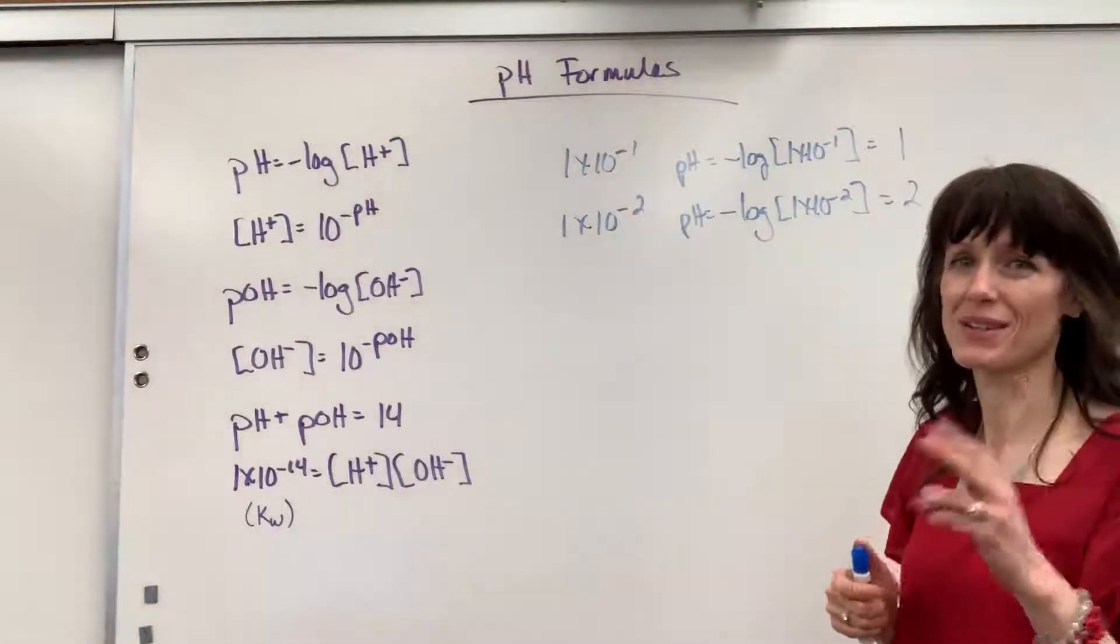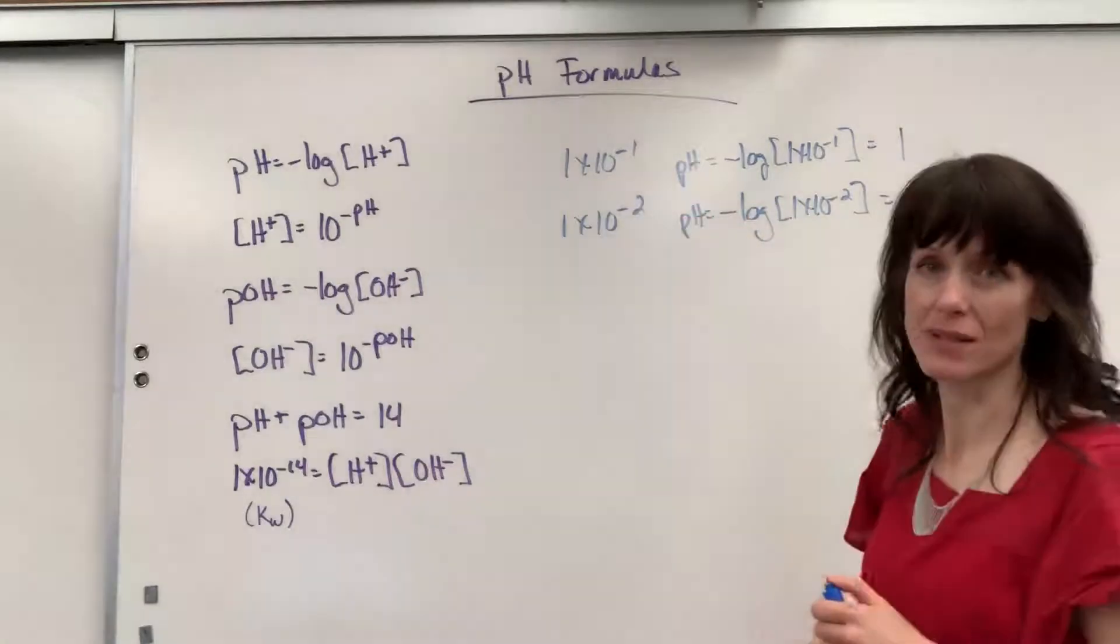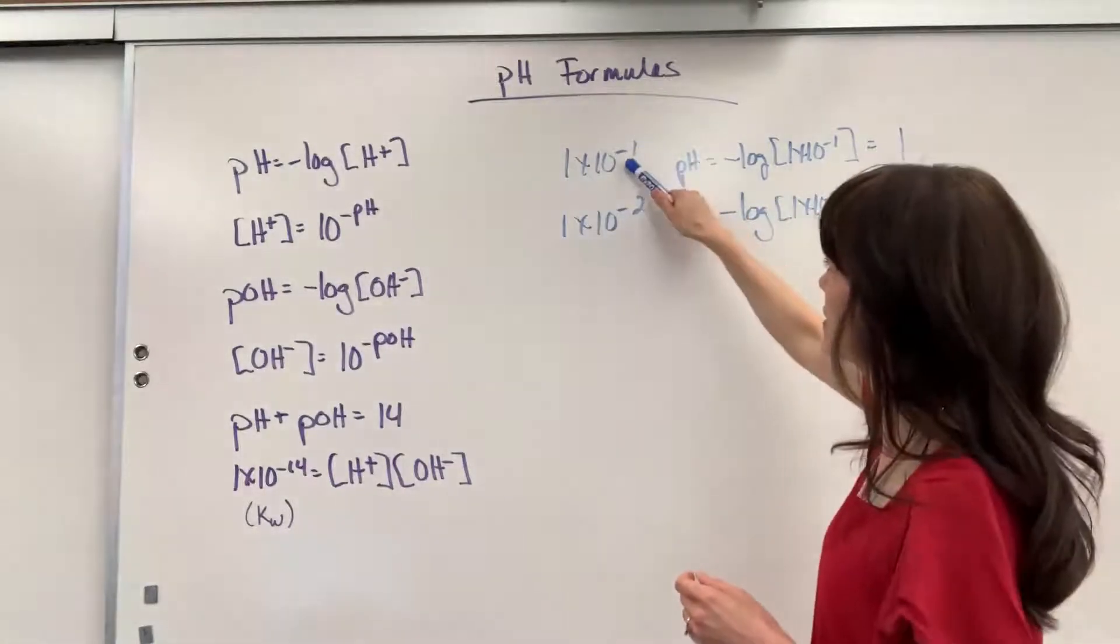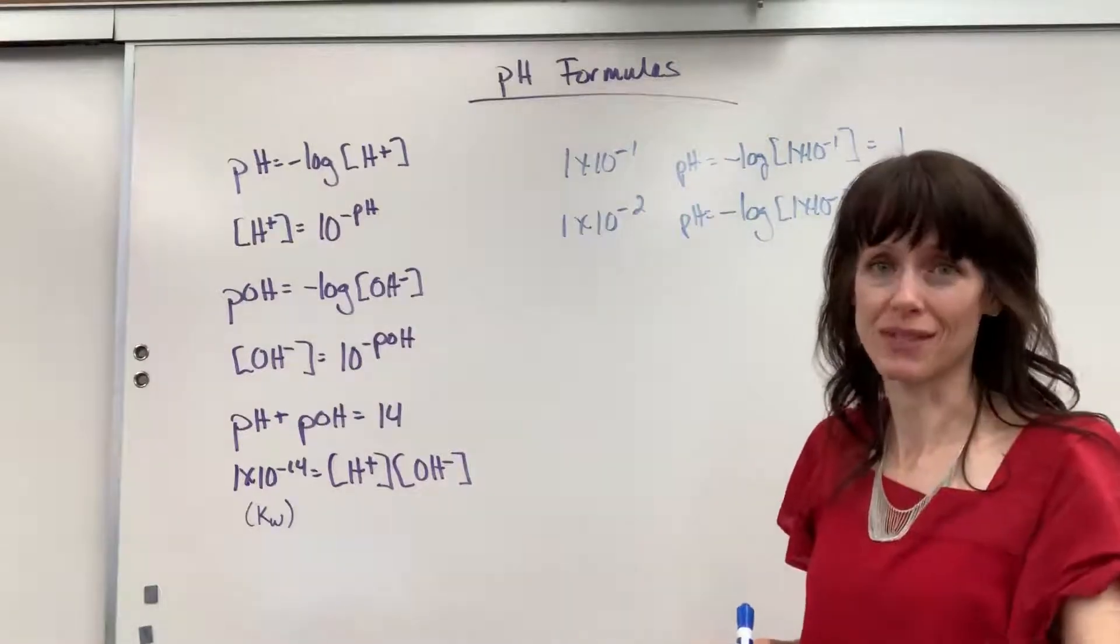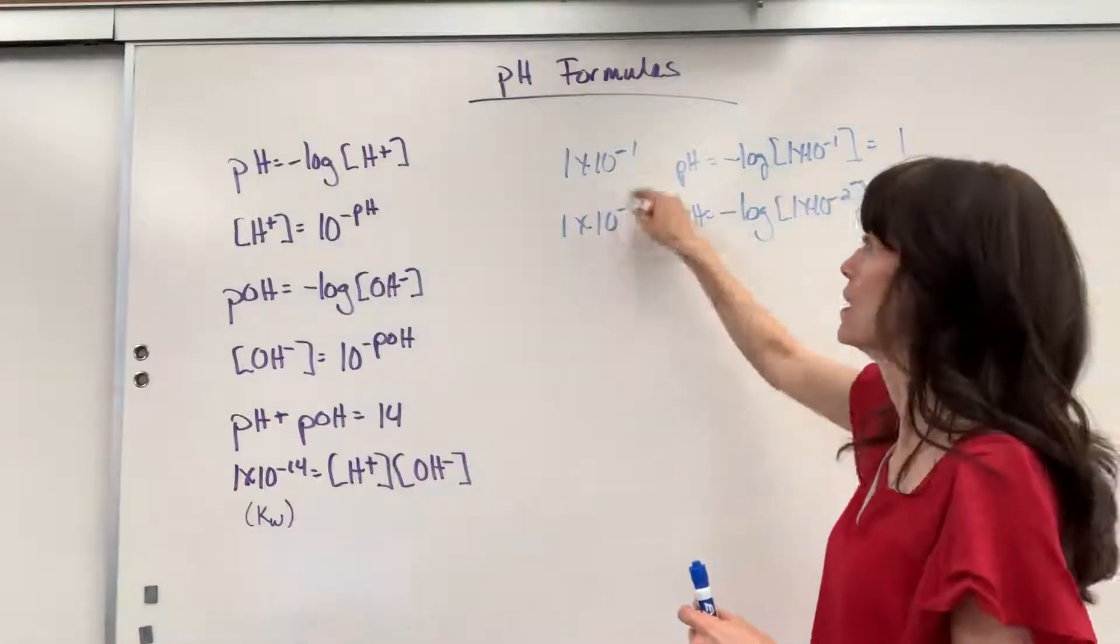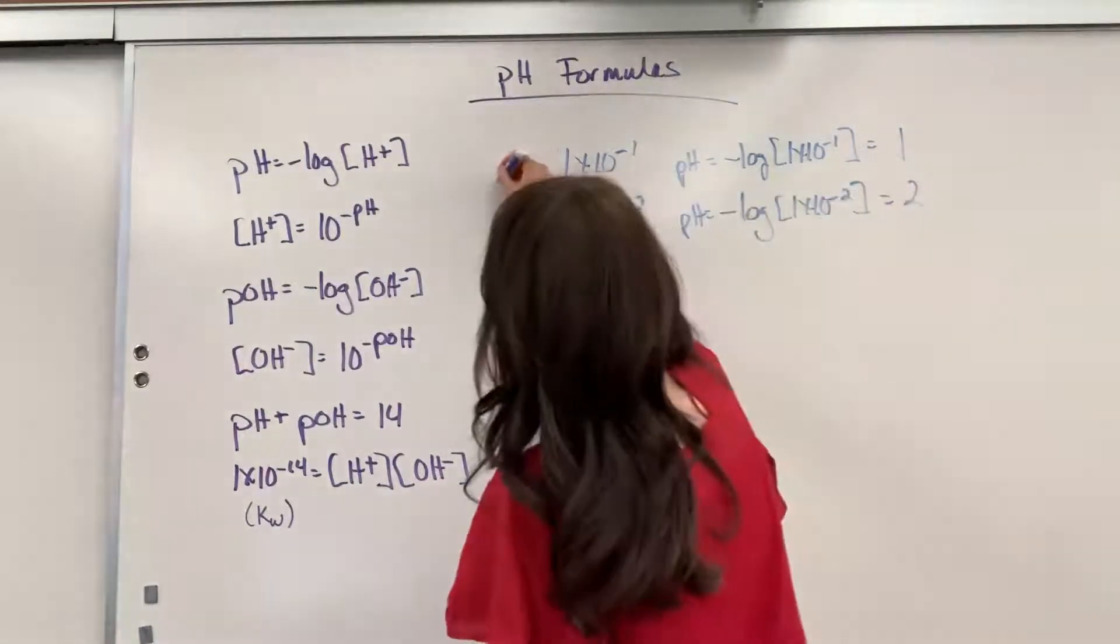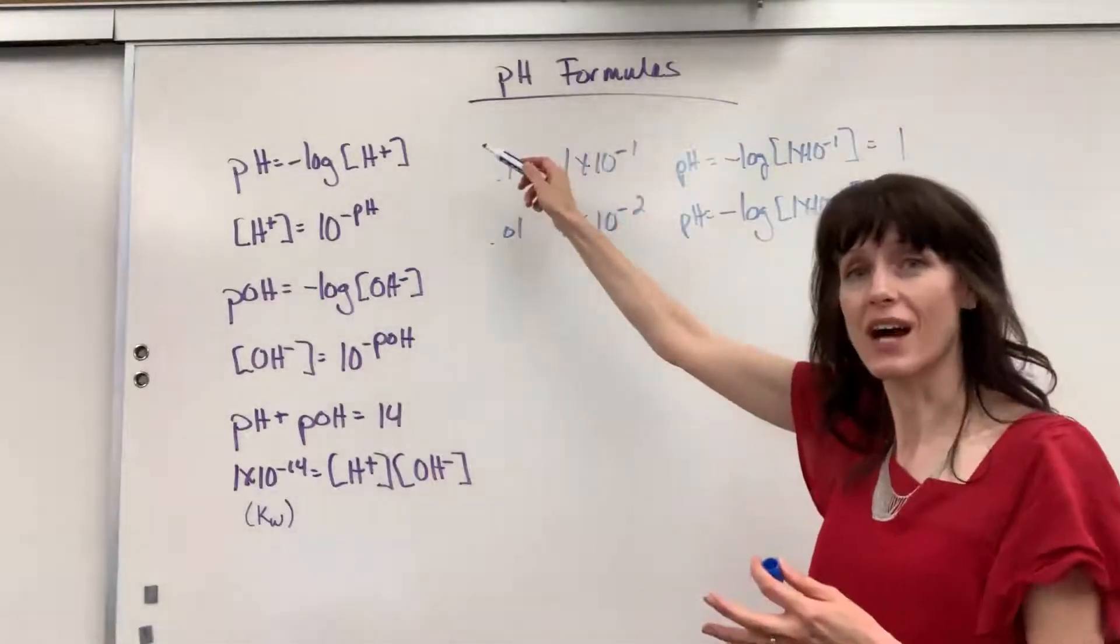Two things that I want you to notice from this. If I were just to compare concentrations, that minus 1 and that minus 2, this has a concentration 10 times greater. There's 10 times more the amount of hydrogen ion than here. You can see that by the zeros. This would be a 0.1 and that's a 0.01. That has 10 times more hydrogen ions,